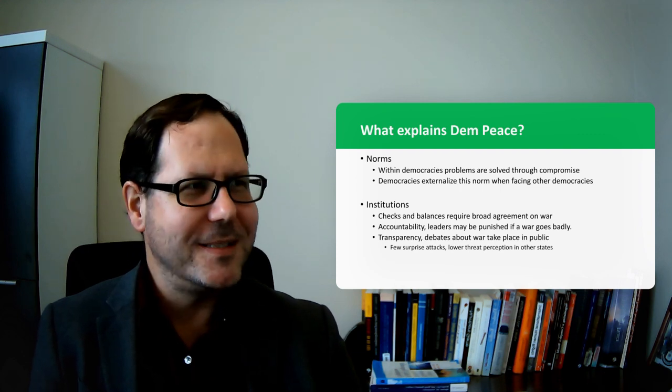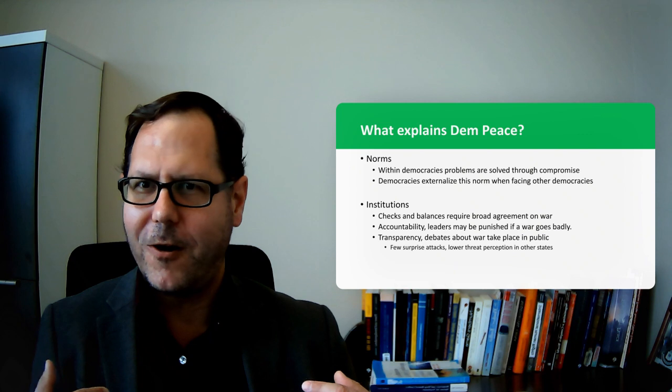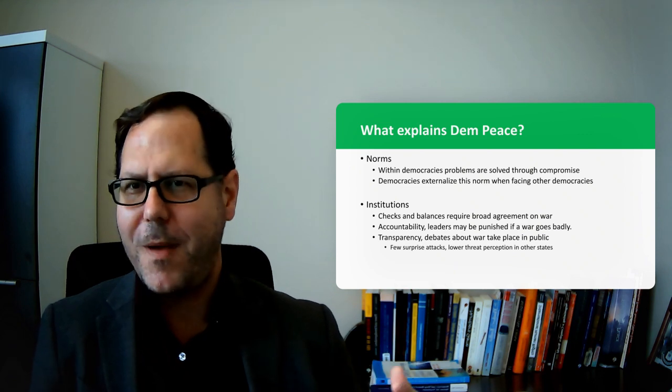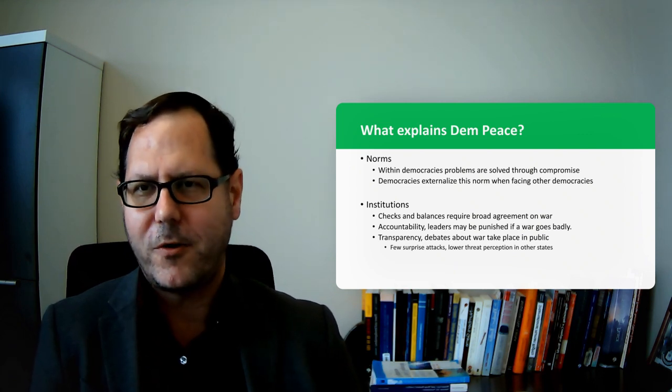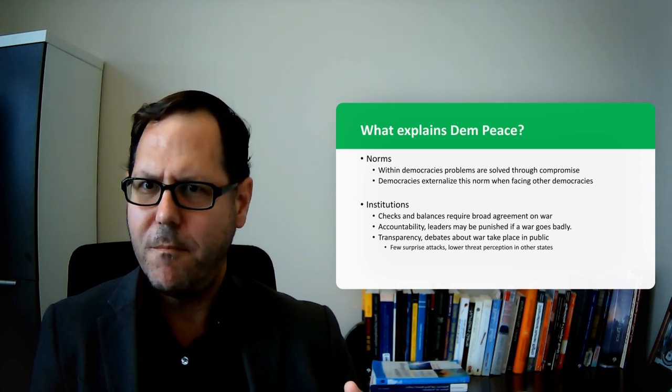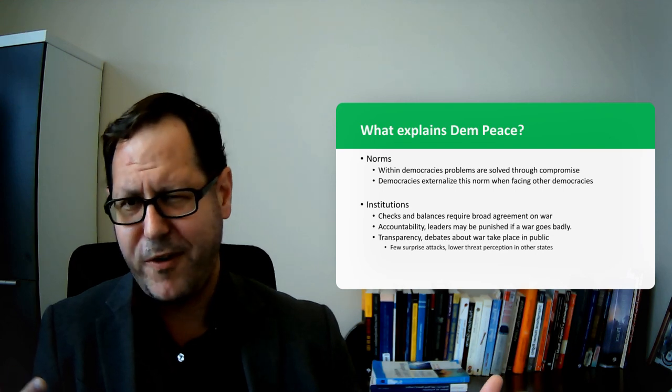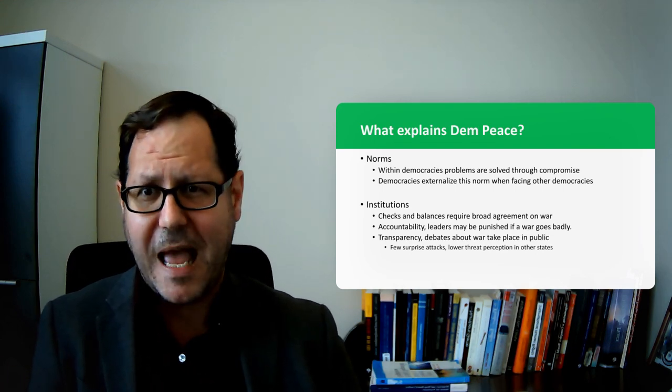And so one of the things that we think happens is that when democracies are operating in the international system and they encounter problems with other democracies, they immediately go into the mode of problem solving that makes the most sense. Which is we sit down, we negotiate, we compromise, we work it out, we figure out a solution that neither of us are really happy with, but resolves the problem without violence.